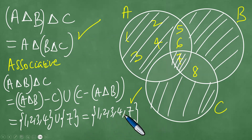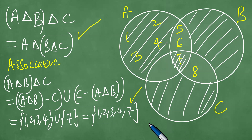So the symmetric difference of A, B, and C all together is {1, 2, 3, 4, 7}. This concludes our discussion on Venn diagrams and symmetric differences. Thanks everybody for watching and joining us.